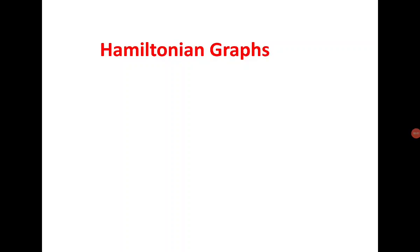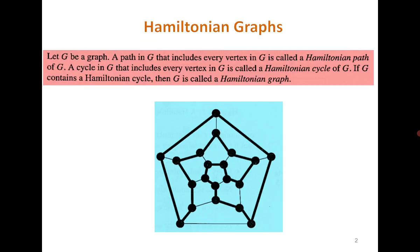Good morning everyone. Recall that in the last class we were discussing Hamiltonian graphs. A Hamiltonian graph is a graph which has a Hamiltonian cycle, that is a cycle which passes through all the vertices.